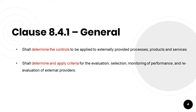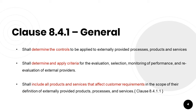The second important requirement is the organization shall determine and apply criteria for the evaluation, selection, monitoring of performance and re-evaluation of external providers based on their ability to provide processes, products and services in accordance with the requirements. The organization shall retain documented information of these activities and necessary actions arising from the evaluation. The third important requirement is the organization shall include all products and services that affect customer requirements — like subassembly, sequencing, sorting, rework and calibration services — in the scope of their definition of externally provided products and services.